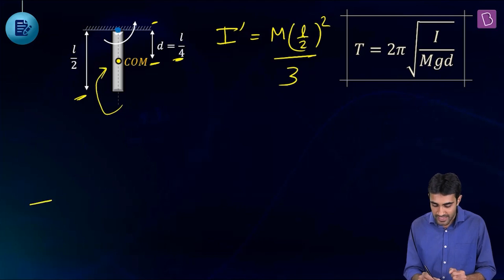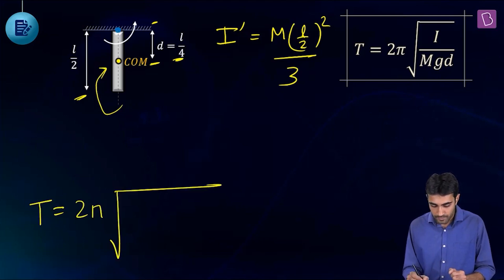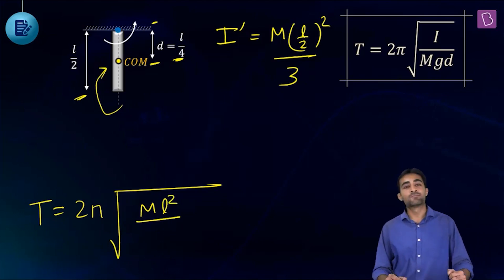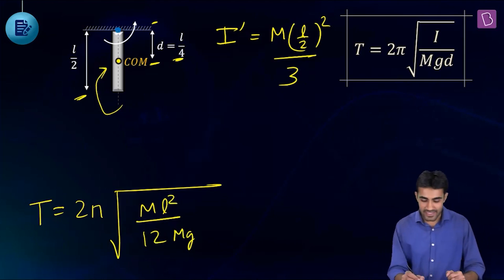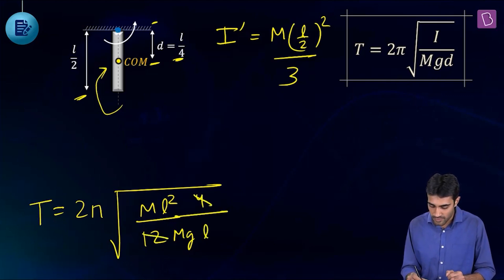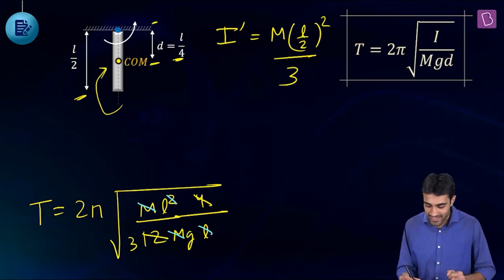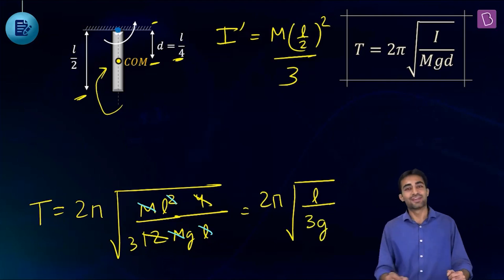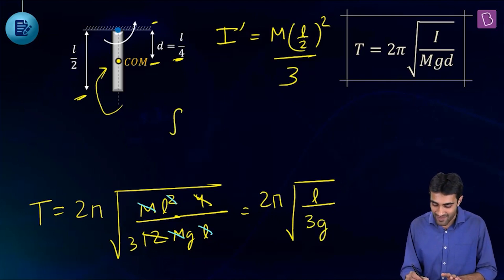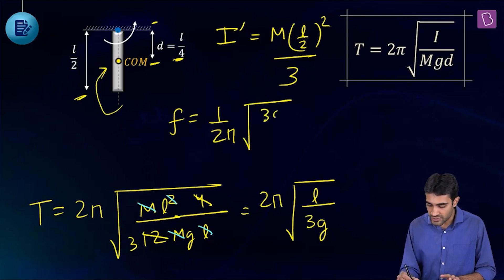The new time period T = 2π√(I'/(mgd')) = 2π√(mL²/12 ÷ mg·(L/4)). Mass and one L cancel, giving T = 2π√(L/3g). So the new frequency f = (1/2π)√(3g/L).